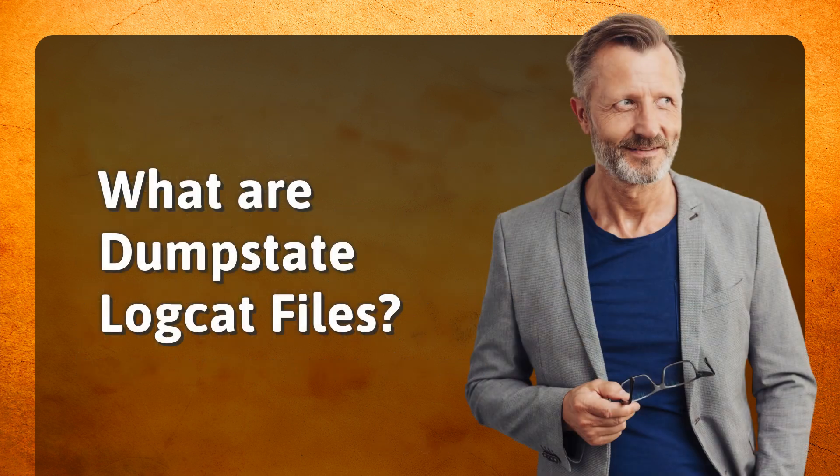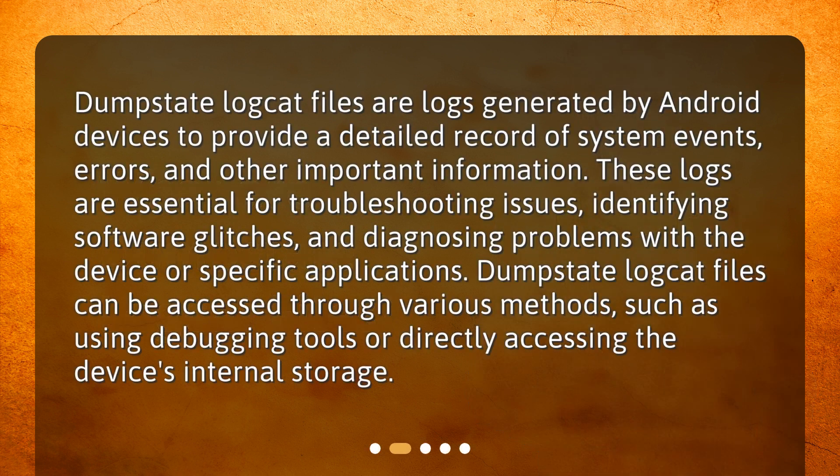What are Dump State Logcat files? Dump State Logcat files are logs generated by Android devices to provide a detailed record of system events, errors, and other important information. These logs are essential for troubleshooting issues, identifying software glitches, and diagnosing problems with a device or specific applications. Dump State Logcat files can be accessed through various methods, such as using debugging tools or directly accessing the device's internal storage.